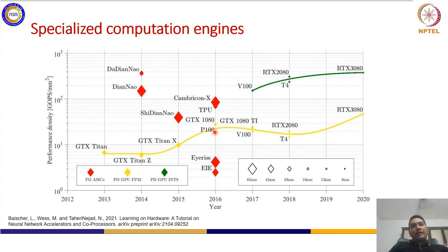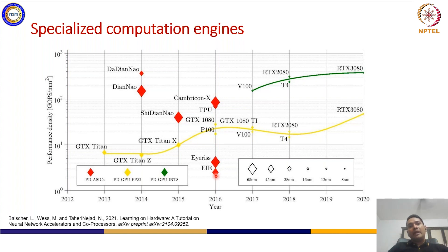DaDianNao is an ASIC-based system published in 2014. In 2016, the TPU — Tensor Processing Unit — was published by Google, which is also ASIC-based. We also have Cambricon, EIE, and several ASIC-based implementations, each using different feature map sizes. The size of these data points in the graph specifies what kind of feature map size they are using.